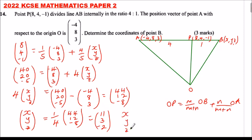So it means X, Y, Z is equals to 11, 3, and minus 2. But remember X, Y, Z are the coordinates of, this is now the position vector of OB, meaning the coordinates of B are 11, 3, and minus 2.